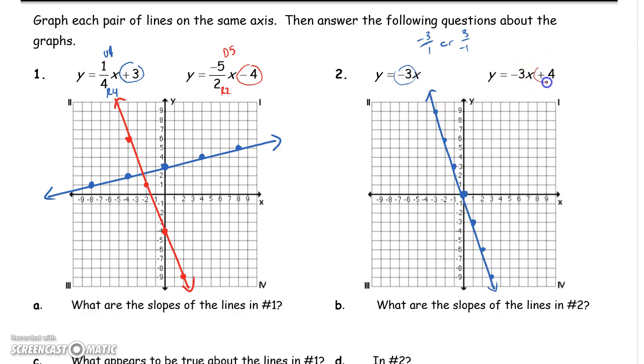The second one will be at 0, 4. Down 3, right 1. Down 3, right 1. Down 3, right 1. Or up 3, left 1. And take out the straight edge.